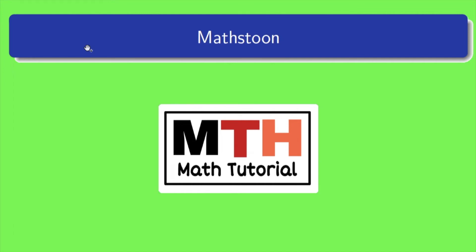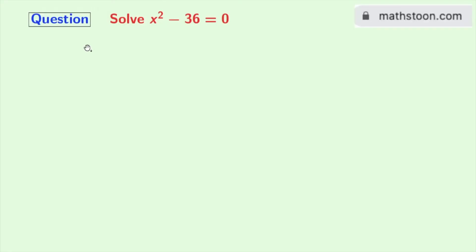Hi friends, welcome to Mathstoon. In this video we will learn to solve a quadratic equation x square minus 36 is equal to 0. To know more like this, please visit mathstoon.com or check the link given in the description box.